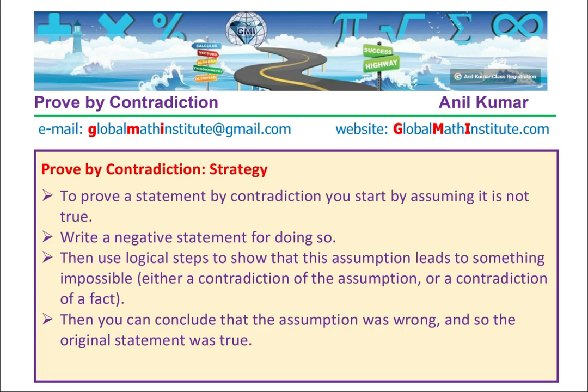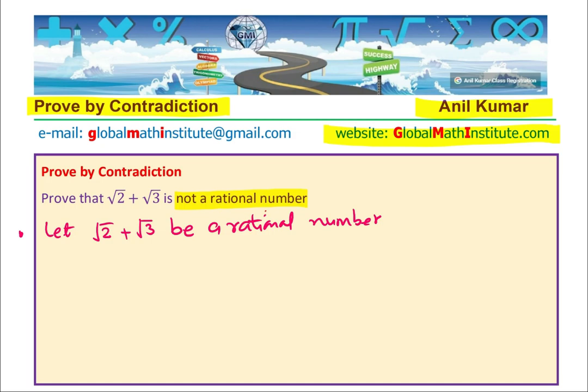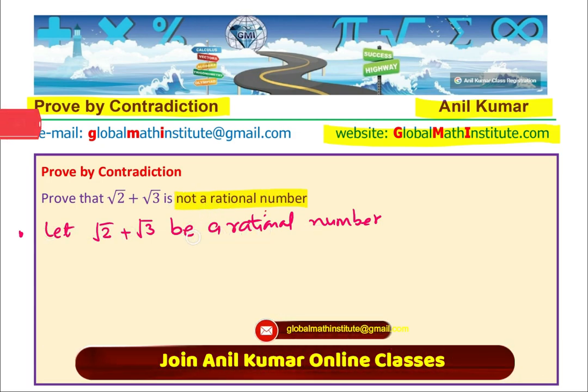Perfect. So these are the steps to be followed. So let's continue. We have already done the negative statement of not a rational number. Let it be a rational number.